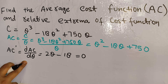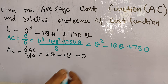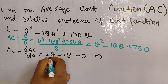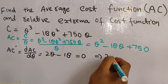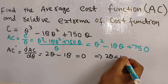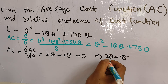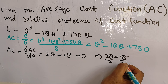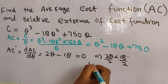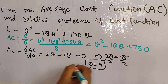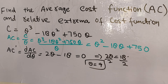Solving for Q, we get 2Q equal to 18, and dividing both sides by 2, Q is equal to 9. This is our critical point.